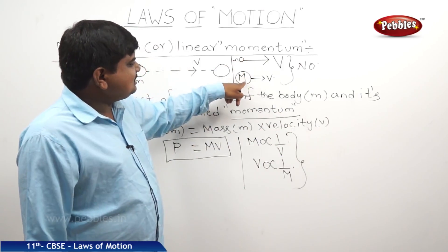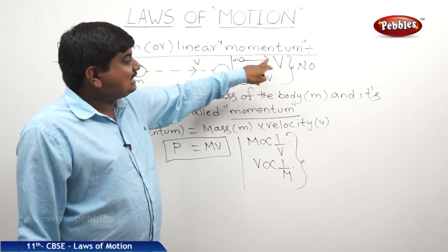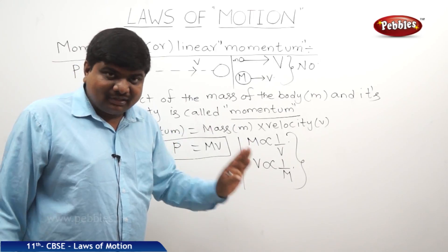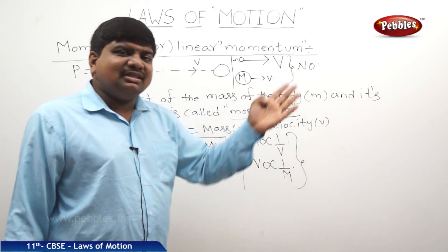So when a higher mass moving with less velocity or a lower mass moving with high velocity has the same momentum. Like this we can conclude the conservation of momentum in the bodies also.